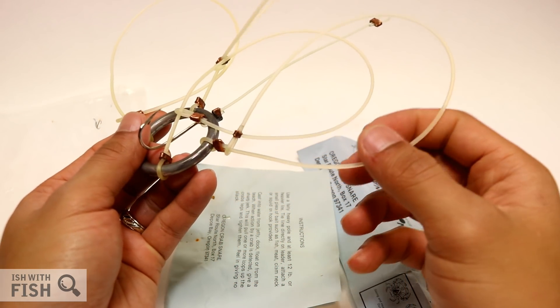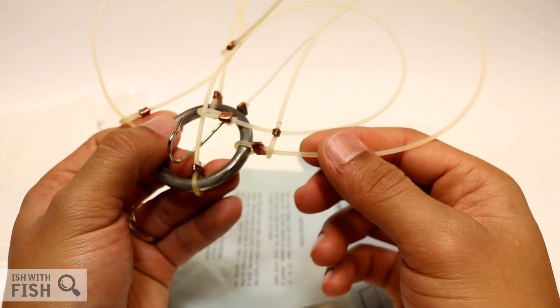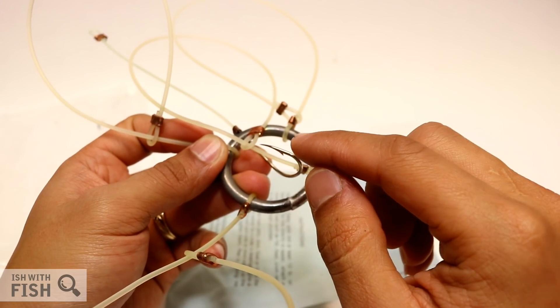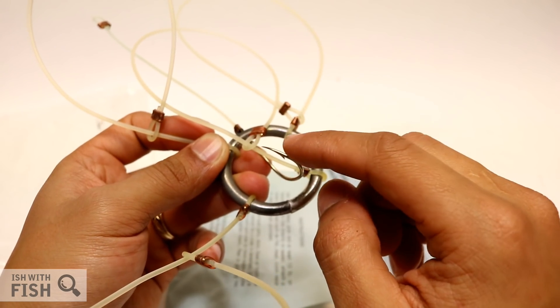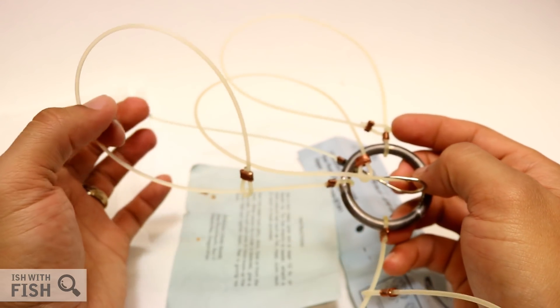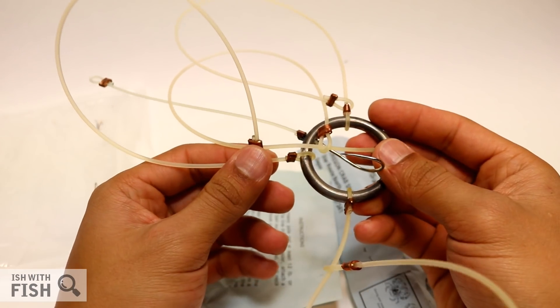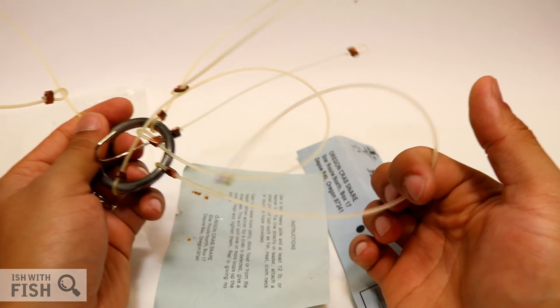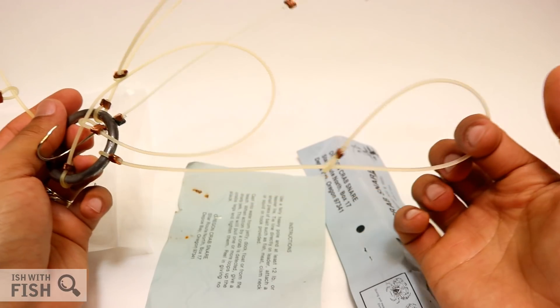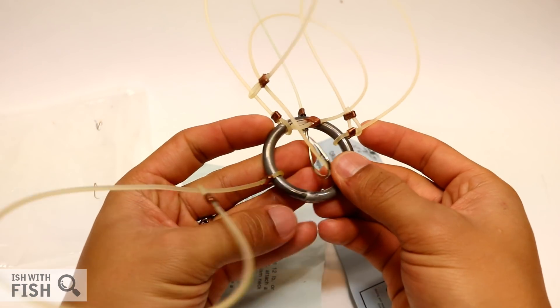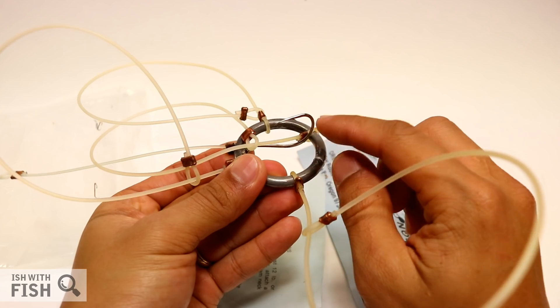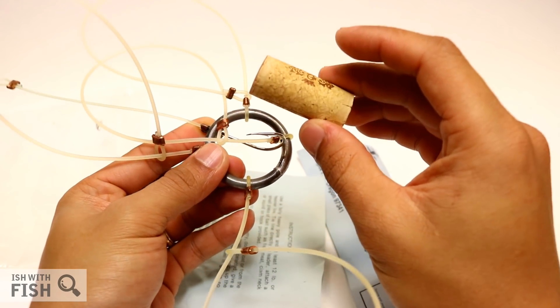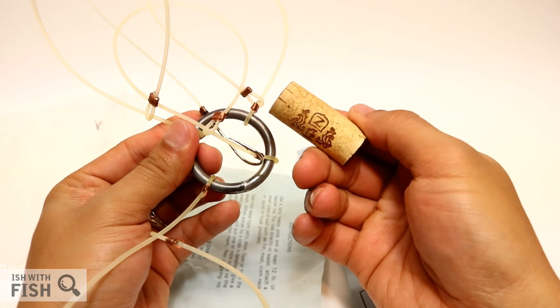You'll notice that the bait holder here is a large barbed hook. Technically, it's illegal to catch crabs using line and hook because the DFW considers the taking of crabs by a barbed hook as a destructive method. They want you to take crabs humanely and in the least destructive method as possible. To counter that, I'm going to bait a whole piece of squid onto this and use a wine cork to cover the point, just to ensure that the crab is able to be released without harm if it's not a keeper.